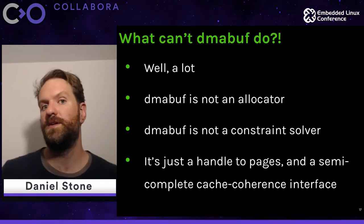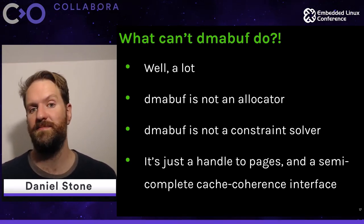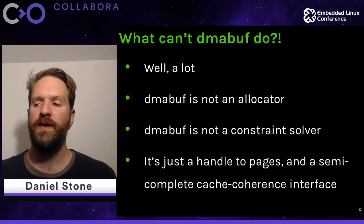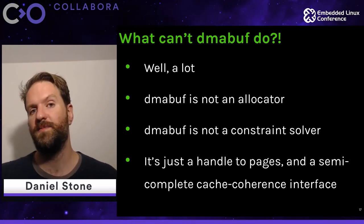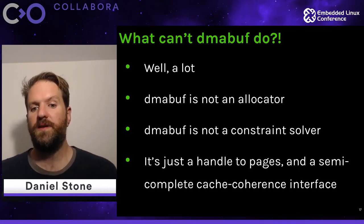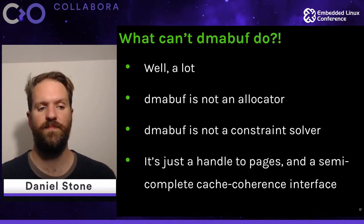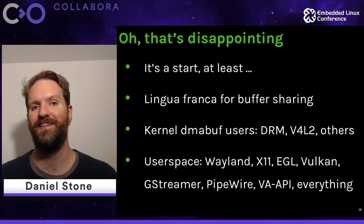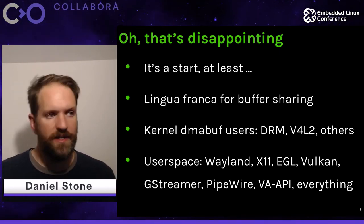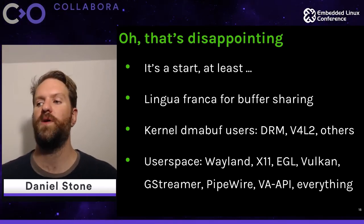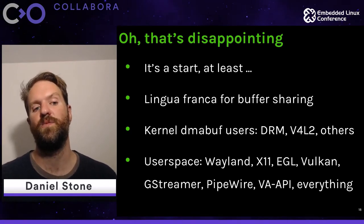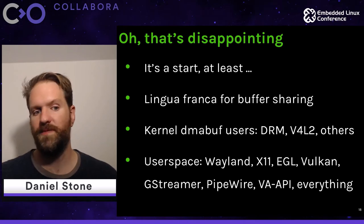Despite being really amazing, there's a lot DMA-BUF can't do. It's not an allocator and never will be; it's not a constraints solver either, which is what precludes it from being an allocator. There are lots of talks at the X.Org developers conference about generic allocation, but we're still not there. Even so, what DMA-BUF has given us is the ability to share buffers between DRM, V4L2, Wayland, X11, EGL, Vulkan, GStreamer, PipeWire, VAPI — anything with external engines doing work is addressable via DMA-BUF. It's our universal exchange for sharing buffer contents without inserting copies and destroying performance.